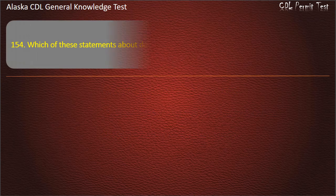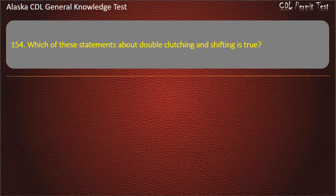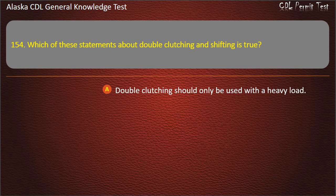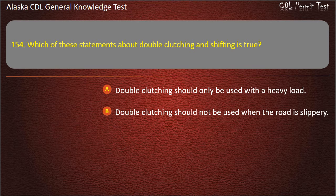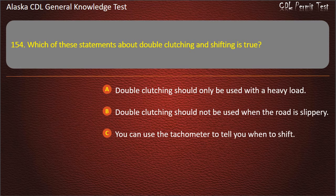Question 154. Which of the statements about double clutching and shifting is true? Double clutching should only be used with a heavy load; double clutching should not be used when the road is slippery; or you can use the tachometer to tell you when to shift. Answer: You can use the tachometer to tell you when to shift.